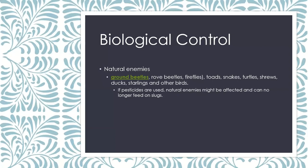There is also biological control for slugs. Ground beetles, toads, snakes, turtles, shrews, ducks, starlings — birds love slugs. Creating a hospitable environment for natural enemies is always a great approach. Be careful if using pesticides though: non-discriminatory pesticides, organic or not, will affect your natural predators as well, meaning you'll lose your biological control. That's always a key downside of chemical control.